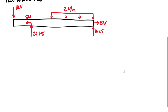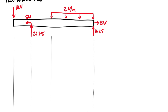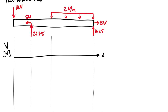Next I'm going to draw the shear diagram. Please draw these diagrams right on top of each other — it makes everything fit much more neatly. Here is my x-axis for the shear diagram. All values on this diagram will be in newtons. We have a jump downward due to the 10 newton force on the left end, so we jump down to minus 10. Downward force means a downward jump.